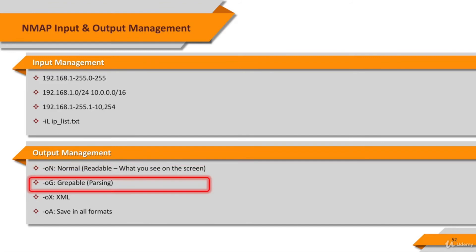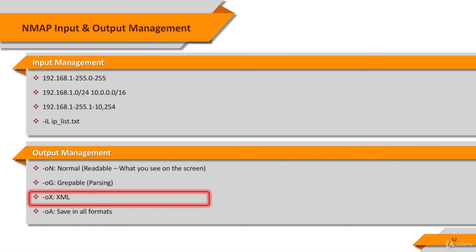Greppable output lets you collect information using the grep command — we've already seen a few examples of grep in this course. XML output is one of the most important output types as it can be converted to HTML, easily parsed by programs such as nmap graphical user interfaces, or imported into databases. There is also the magic parameter -oA (uppercase A) which generates outputs in all formats at once.